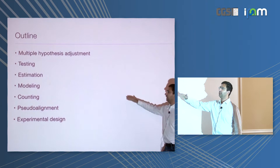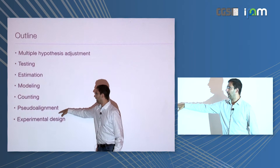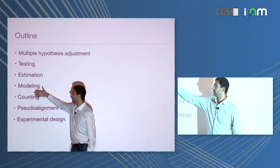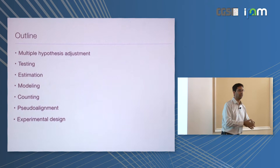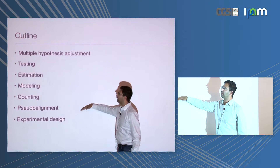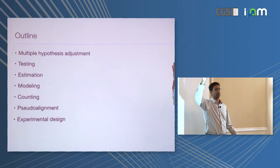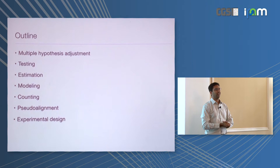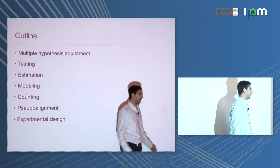Quick outline: I'm going to go through the steps in reverse order because I think it's pedagogically easier. Usually you would design an experiment, align or pseudo-align reads, count somehow, model your counts, estimate mean and variance, perform statistical tests, get p-values, and do multiple testing correction. I'll start with the end result. Many of you have done analyses comparing two conditions, so you know that what comes out are p-values or q-values — that's a baseline we can all start with.